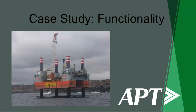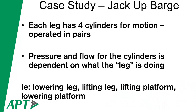Using simulation for functionality — here's a case study of a jack-up barge used in the local area. The jack-up barge has four legs; each leg has four cylinders for motion operated in pairs. Pressure and flow for the cylinder is dependent on what the leg is doing. There are different modes depending on whether we're lowering a leg from a floating barge to the sea floor, or lifting the barge off and out of the water. Depending on whether the barge is half-floating or semi-floating, it also depends on how much weight the legs need to lift and whether we need to use two or four cylinders to actually lift the barge.